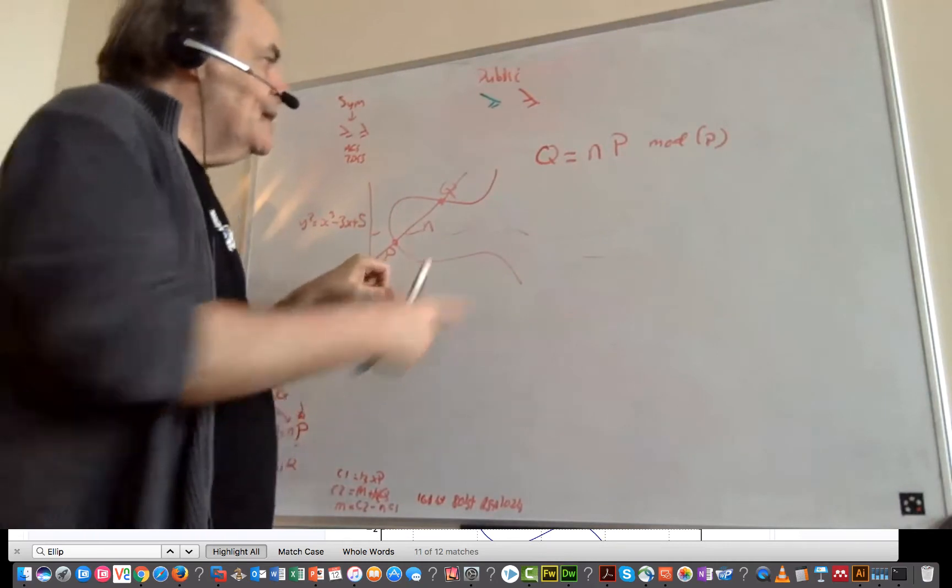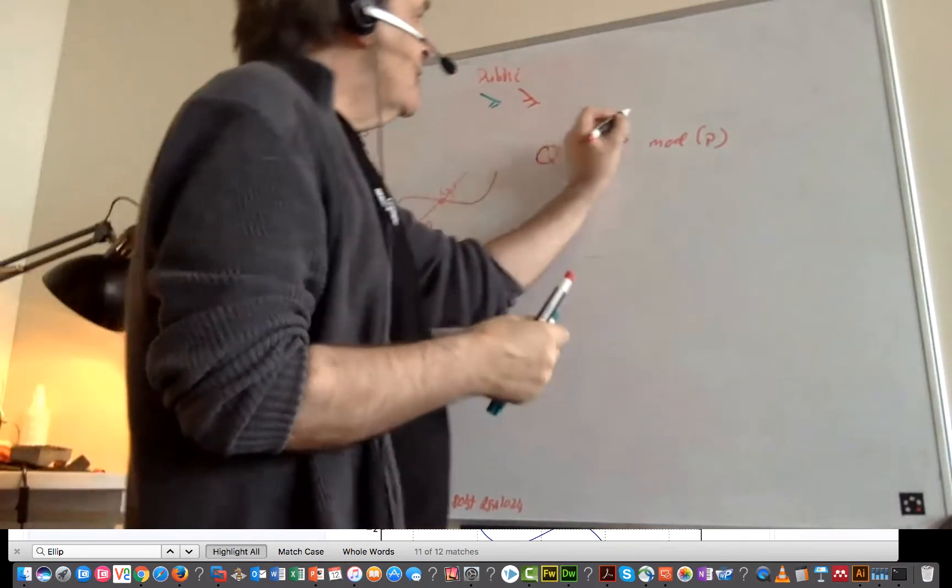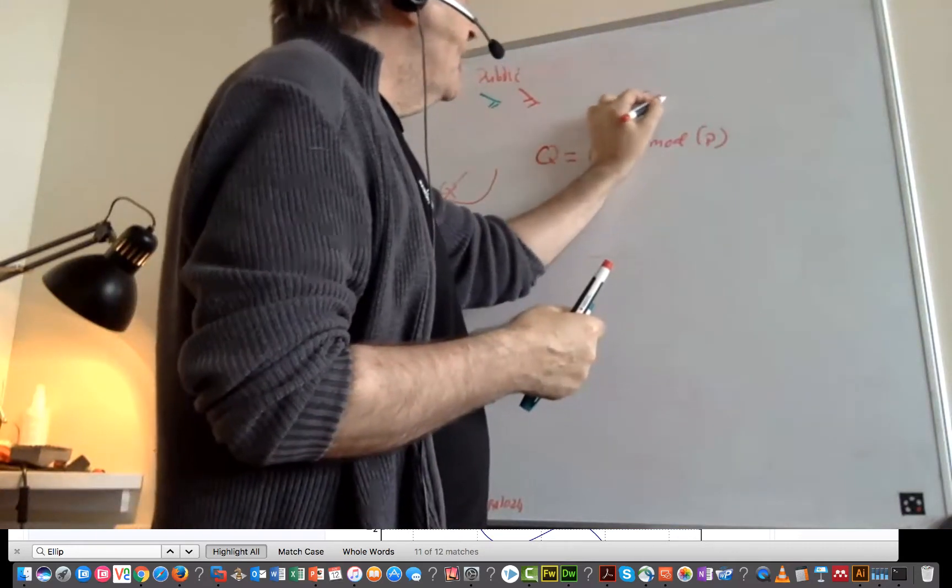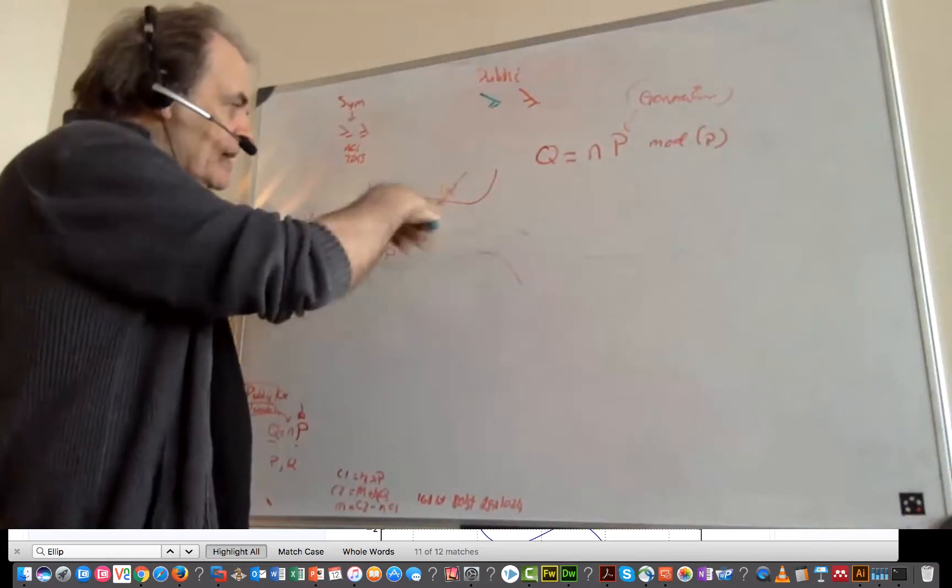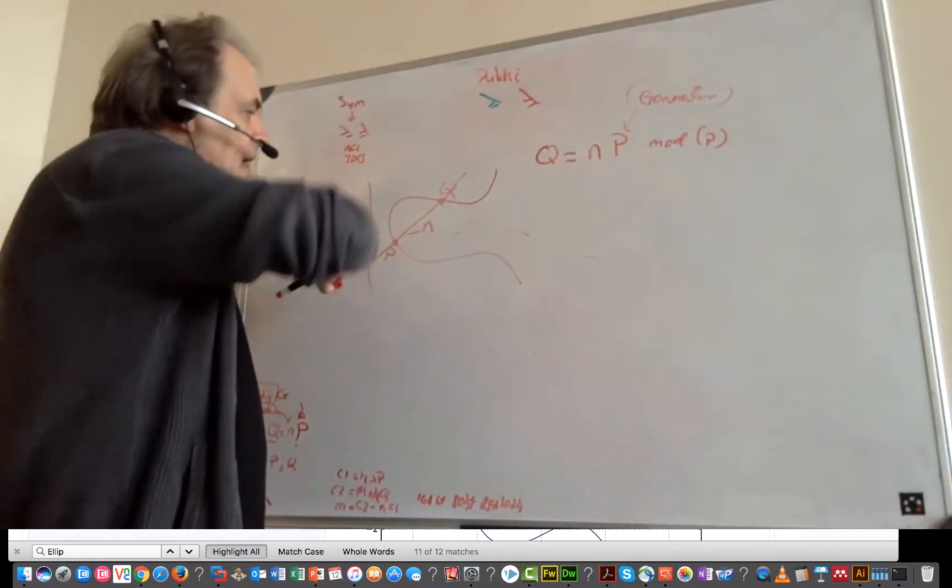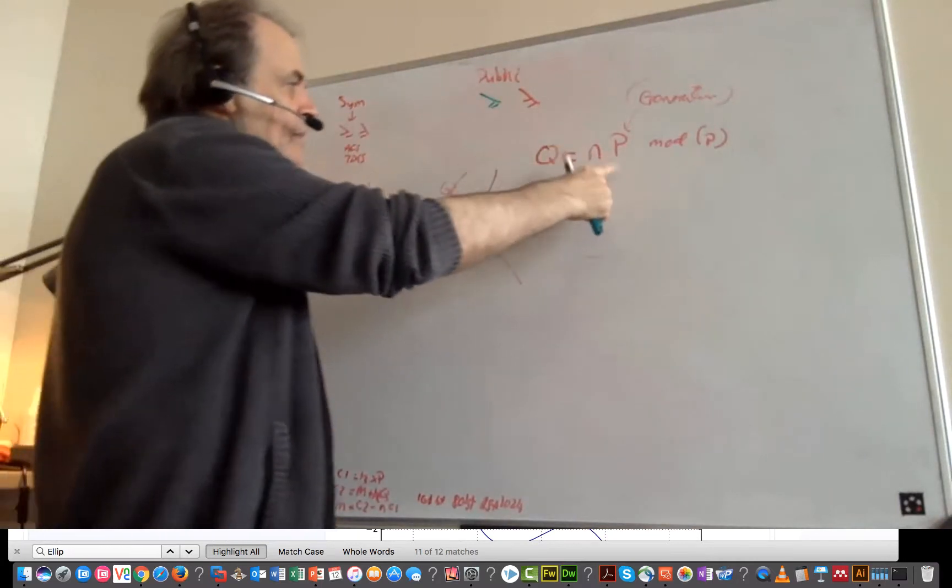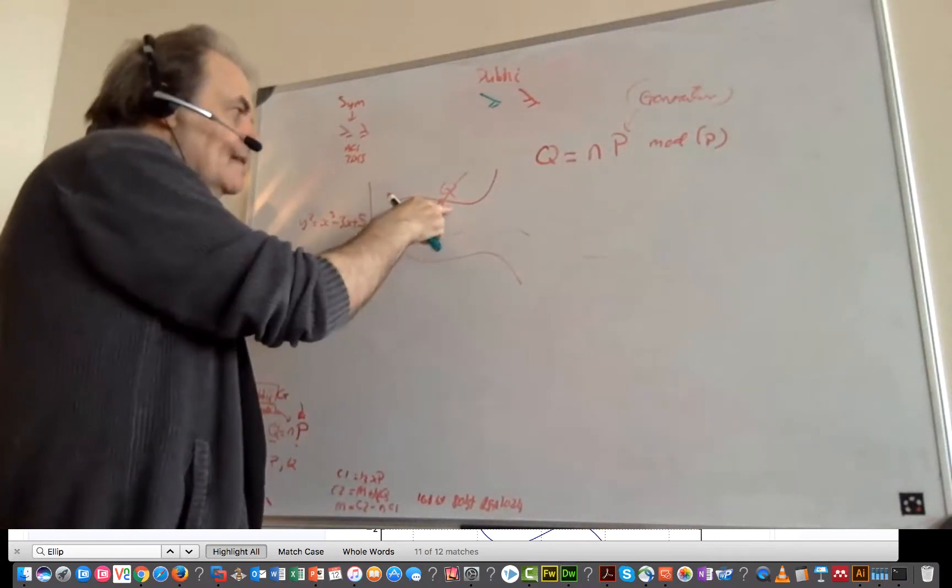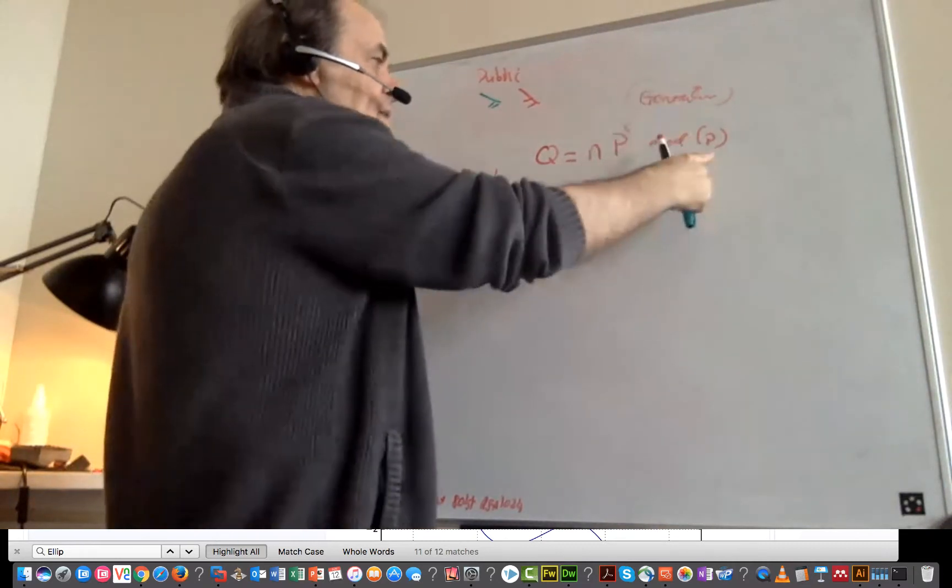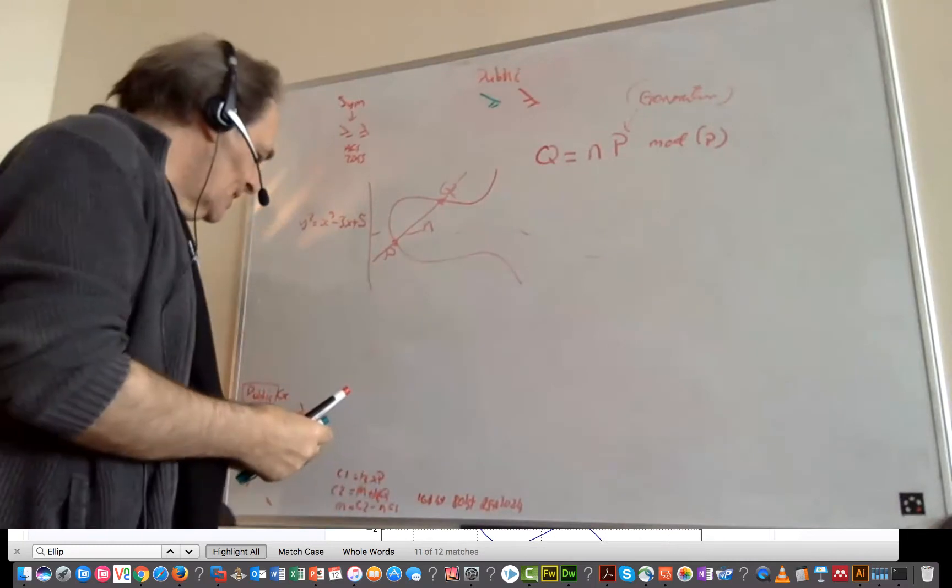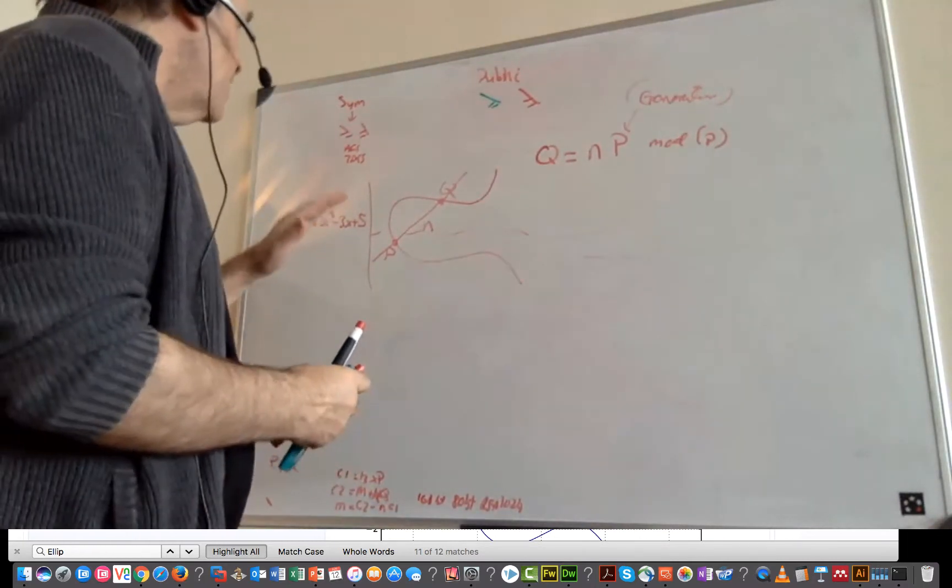So we have a value of P, value of Q. P is what we call our generator value, and it's a point on the elliptic curve. We have N, which is our random number, very large number. We multiply that, and we end up with a value of Q, which is another number there. And we take mod P, and hopefully that will work out.